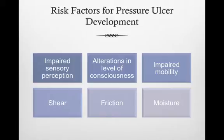Risk factors for pressure ulcers generally occur in these six areas: impaired sensory perception, shear, alteration in level of consciousness, friction, impaired mobility, and moisture.